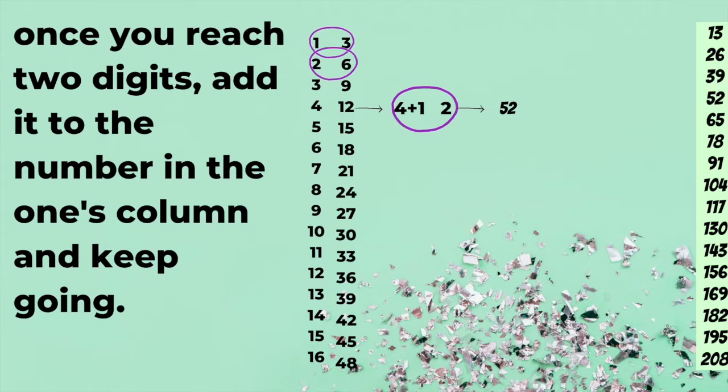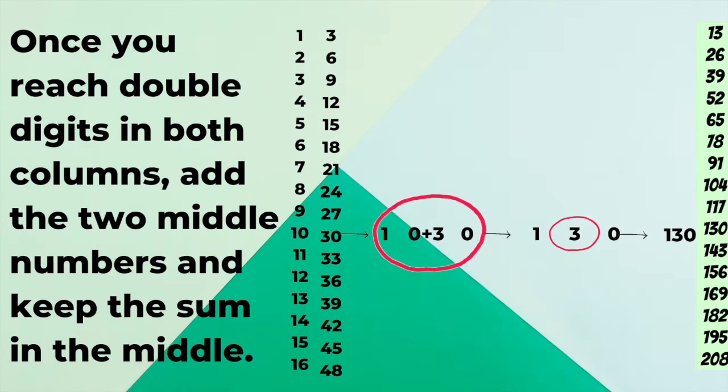Once you reach double digits on the other side, then you just add the two innermost numbers and leave it there. So, here it's three. So, it's 130. On the next one, it would be four. So, it would be 143. And you can continue on down the same way.